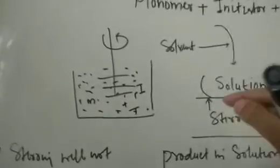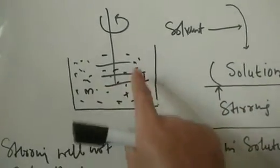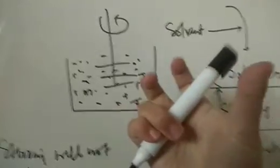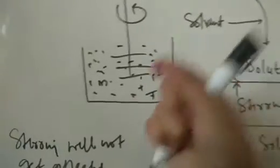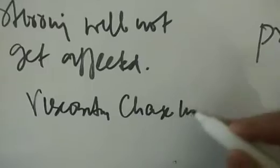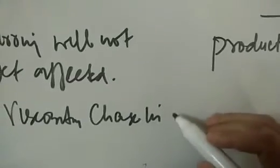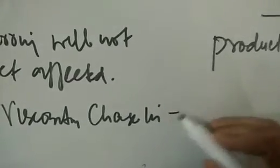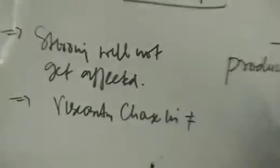The second point: in bulk polymerization, because a solid mass forms, the viscosity of the solution becomes pretty high. But in solution polymerization, the viscosity of the solution doesn't change as much. The viscosity change is very low.